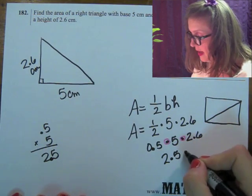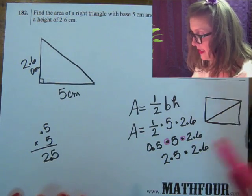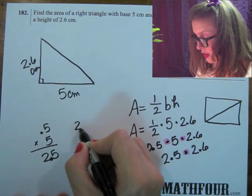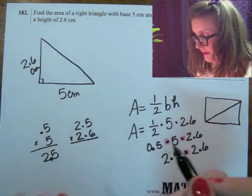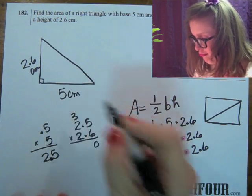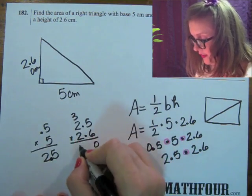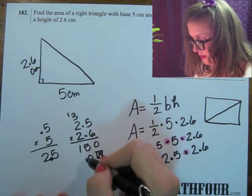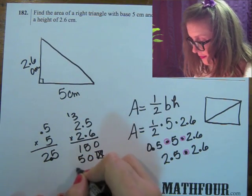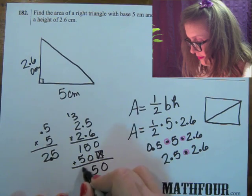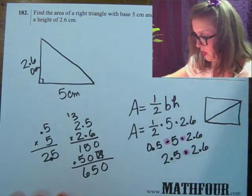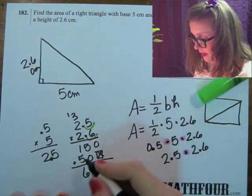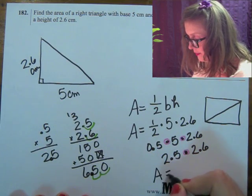And then we still multiply that by 2.6. Getting messy — I'm going to put my pink circle. So now I need to multiply 2.5 by 2.6. 6 times 5 is 30. 6 times 2 is 12, plus 3 is 15. 2 times 5 is 10, carry that 1, 2 times 2 is 4. And then add that. Now we need decimals — we have one decimal here and one decimal here, so I need 2 total. Put my decimal there. So my area is 6.5.